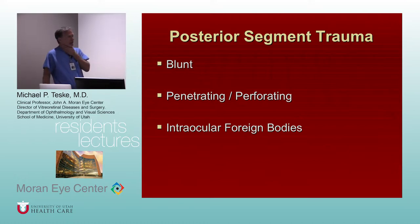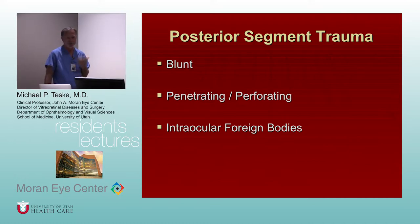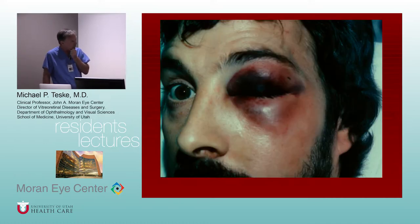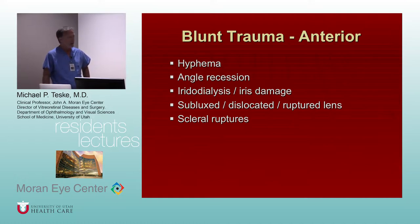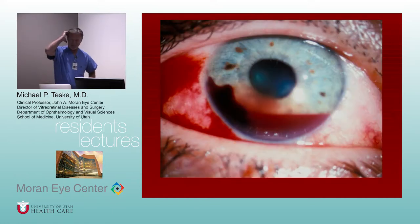We'll go through the typical findings with trauma, breaking it down into blunt trauma and then penetrating and perforating injuries, plus intraocular foreign bodies. Starting at the front of the eye — hyphema is a fairly common finding with severe blunt injury along with angle damage, but we're not going to talk specifically about hyphema management.